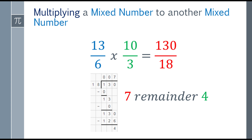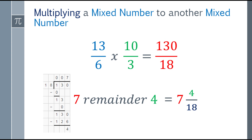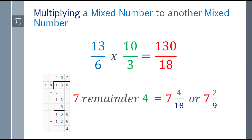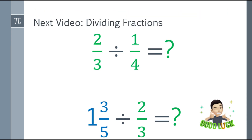That's our improper fraction, but we still need to reduce it or convert it to a mixed number. One hundred thirty divided by eighteen gives a quotient of seven with a remainder of four. So seven is the whole number, four is the numerator, and eighteen is the denominator — giving seven and four over eighteen. Reducing to lowest terms: four divided by two is two and eighteen divided by two is nine, so the final answer is seven and two over nine.